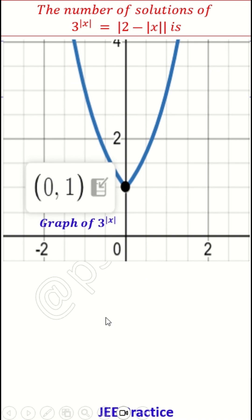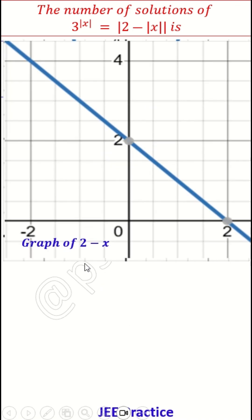Now let us draw RHS side. 2 minus x is something like this, a line equation. 2 minus x is something like this. It will intersect at 0 comma 2 and 2 comma 0. Graph like this, line graph.